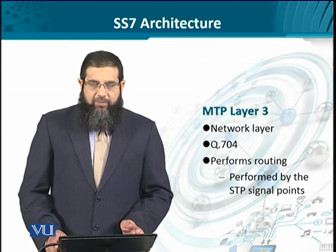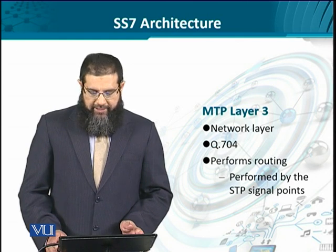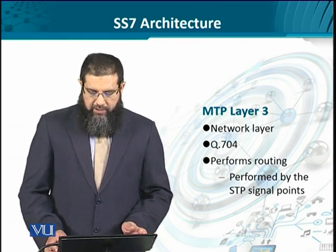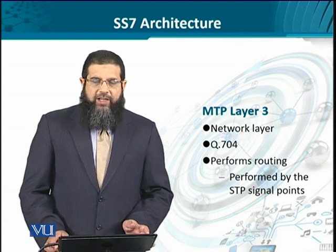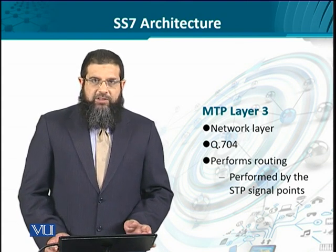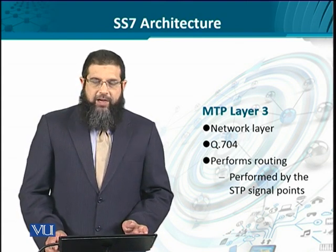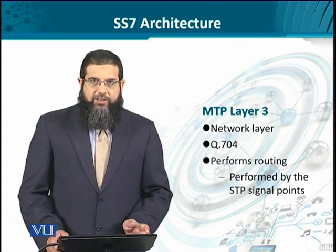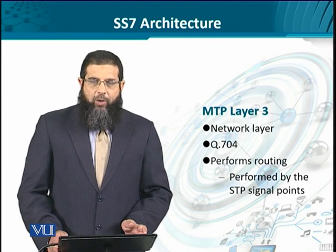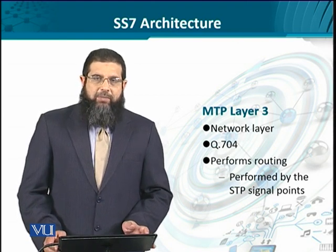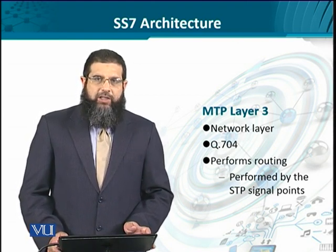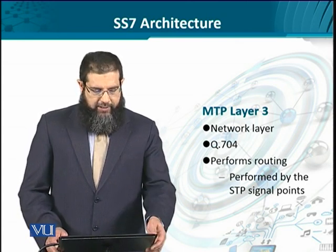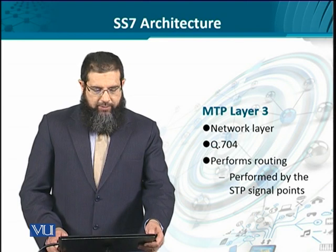MTP layer 3 is similar to the network layer and is defined in Q.704. It performs routing operations, which as we saw were determined by the STP in the last lecture. It is important to understand clearly that this routing is done for control messaging only — we are looking at the signaling network, not the voice network as such.